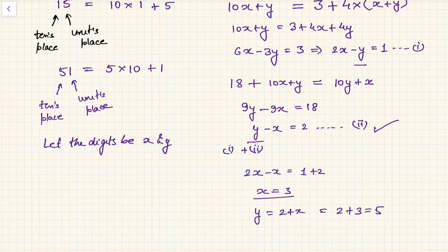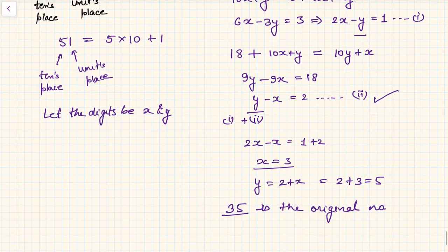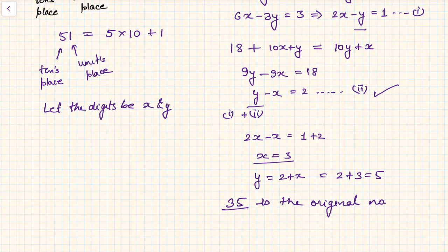Let us check whether it is correct or not. So let us see the condition. First is, the number should be equal to what? 3 plus 4 times sum of the digits, so 3 plus 4 into 8, which is 35. True, both are 35.